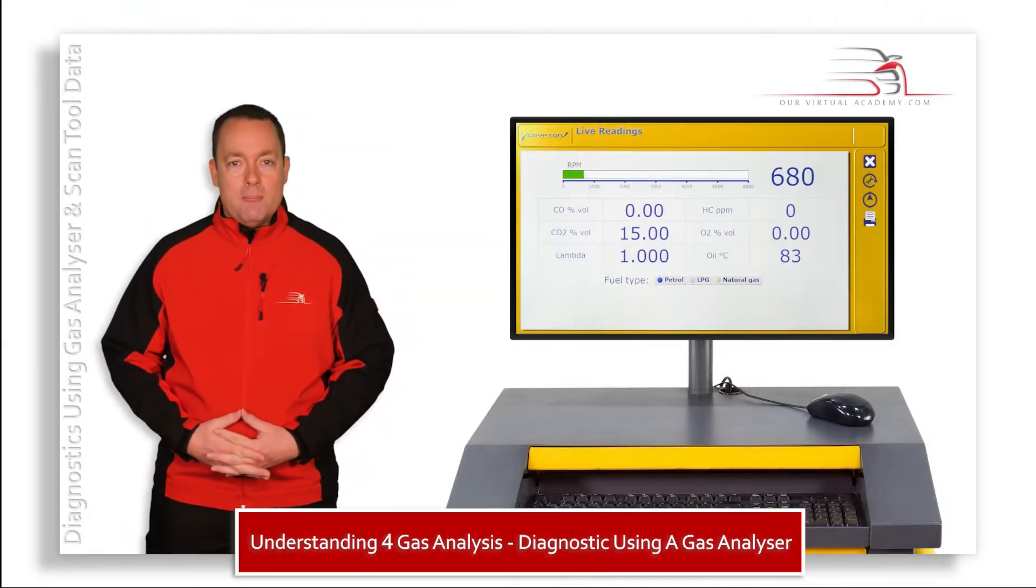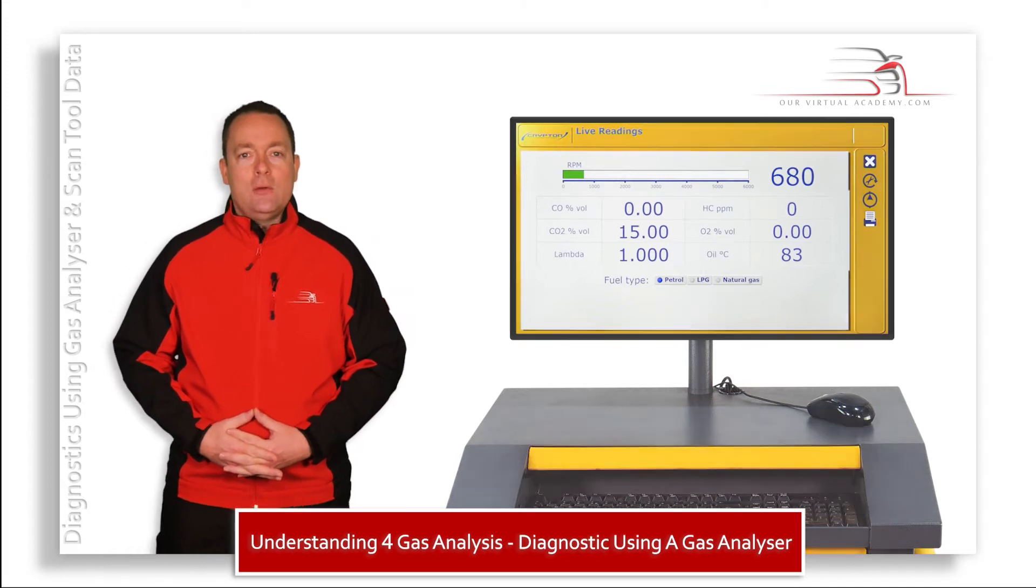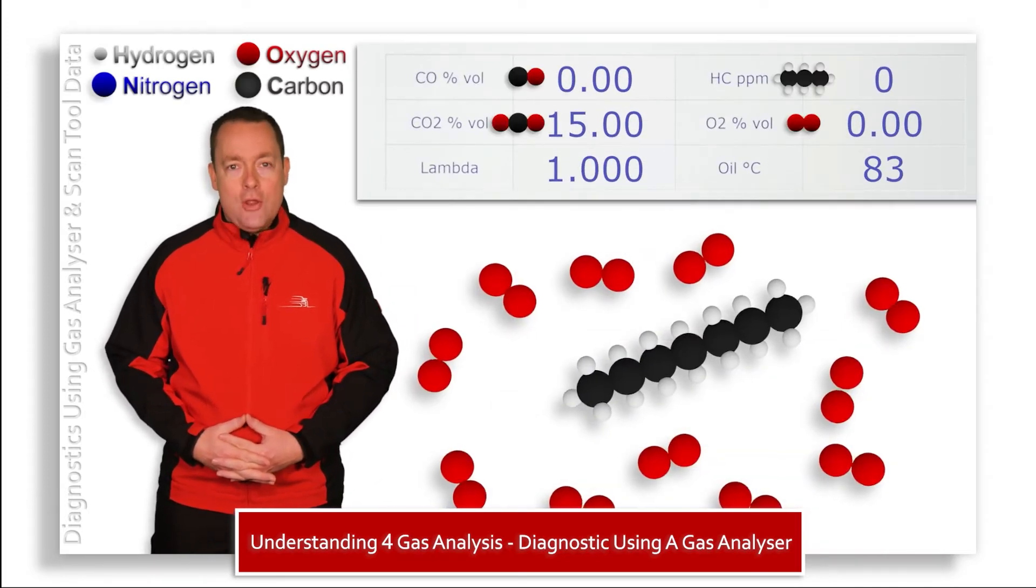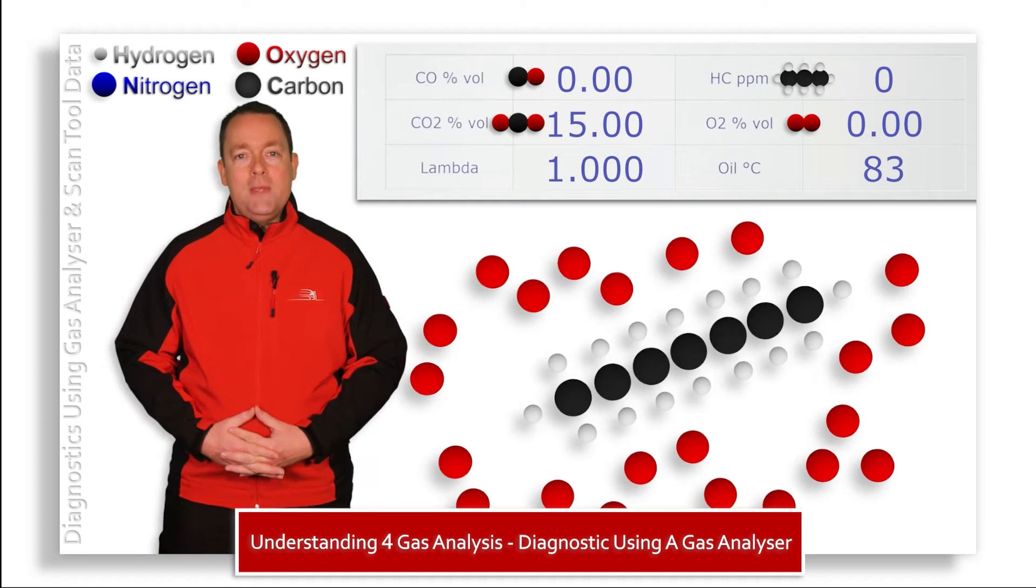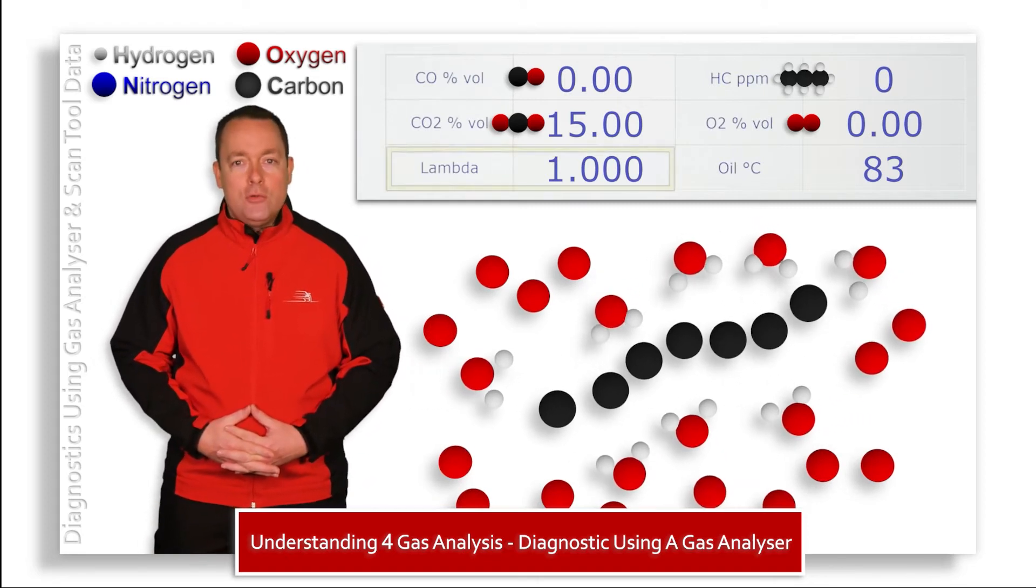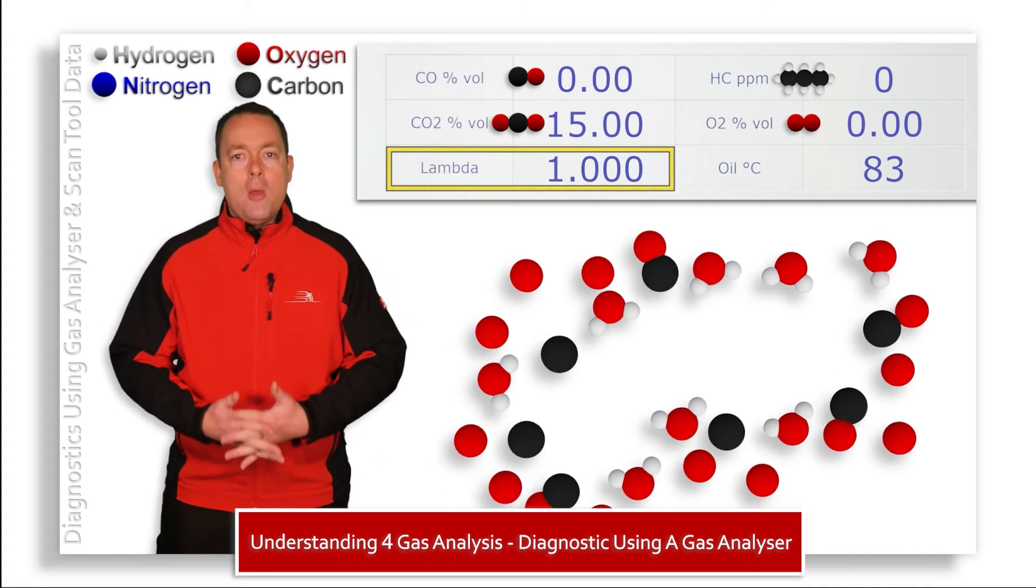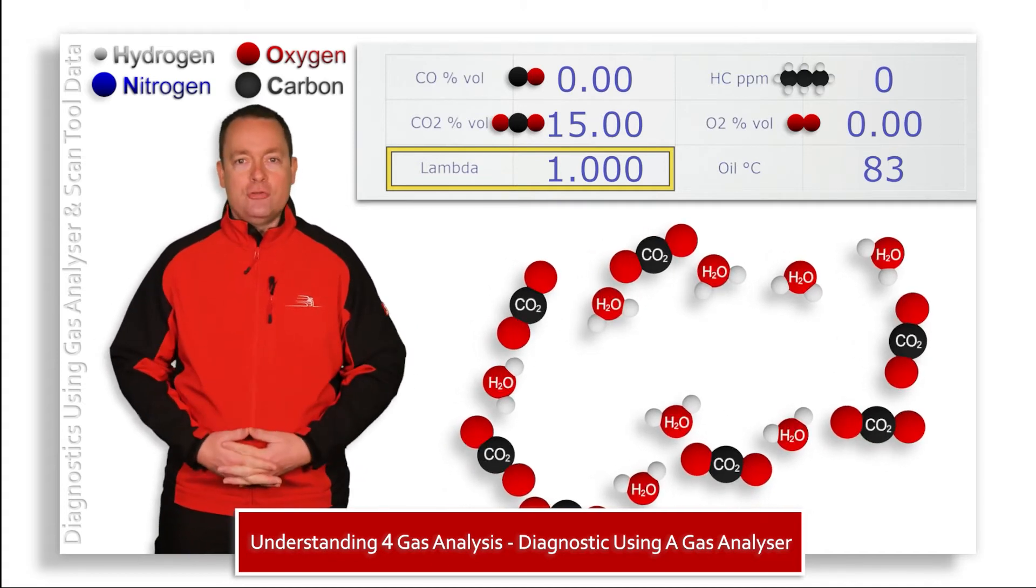All we really need to remember is it's able to make the calculation because it knows exactly what it would be seeing if a perfect air fuel ratio was being mixed and ignited perfectly in the combustion chamber.